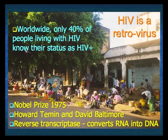HIV is a retrovirus — hence the drugs being called antiretroviral drugs. Retroviruses were first described when Howard Temin and David Baltimore separately discovered reverse transcriptase, for which they won a Nobel Prize in 1975. Reverse transcriptase is an enzyme that converts RNA into DNA, which before their work wasn't thought to be possible.